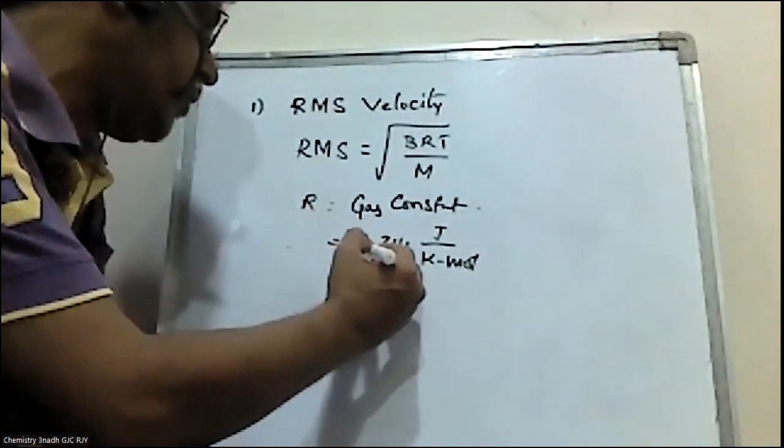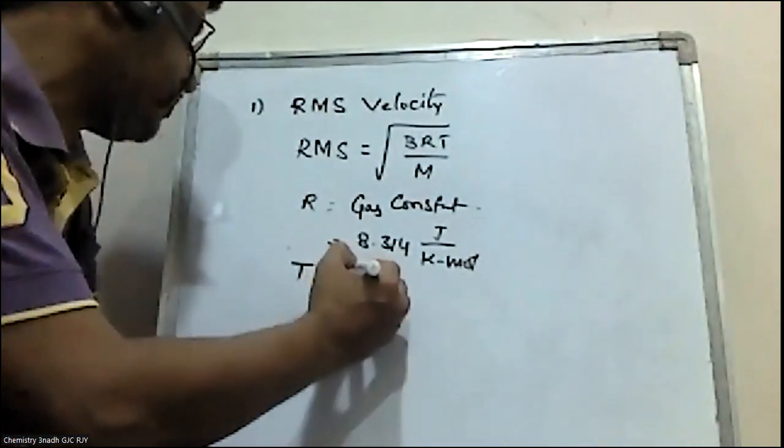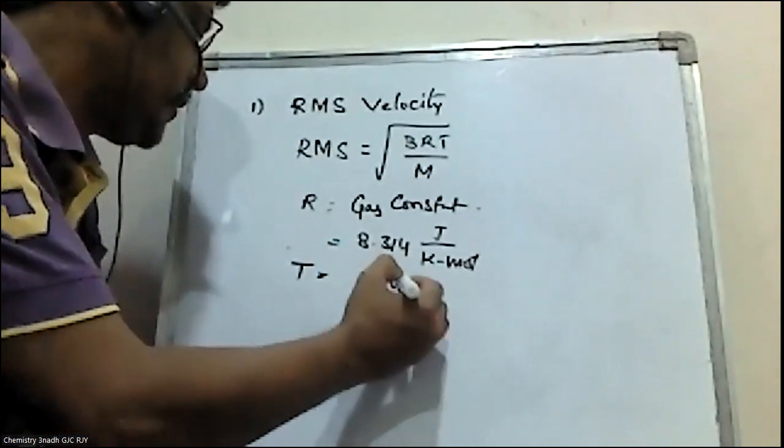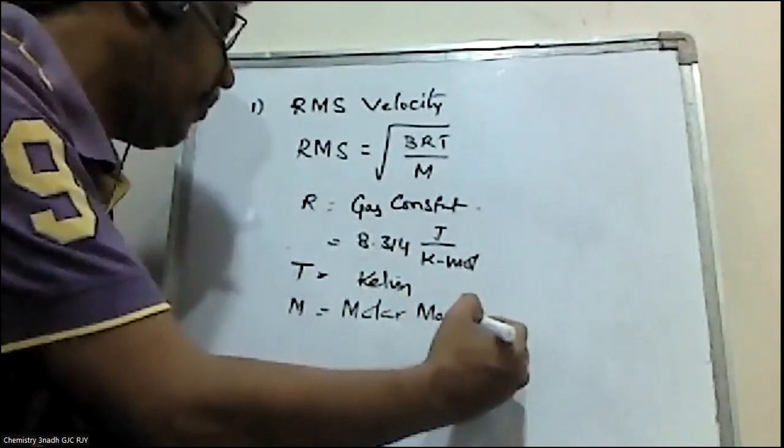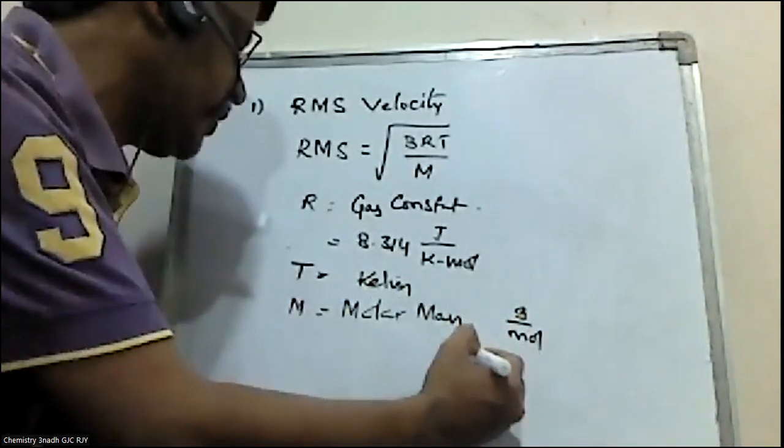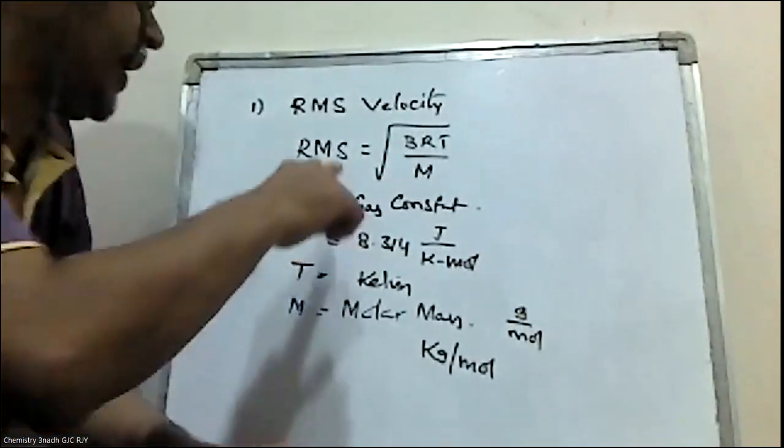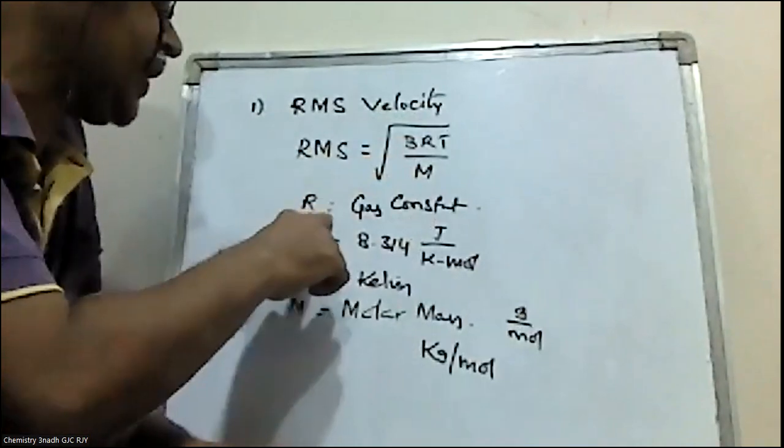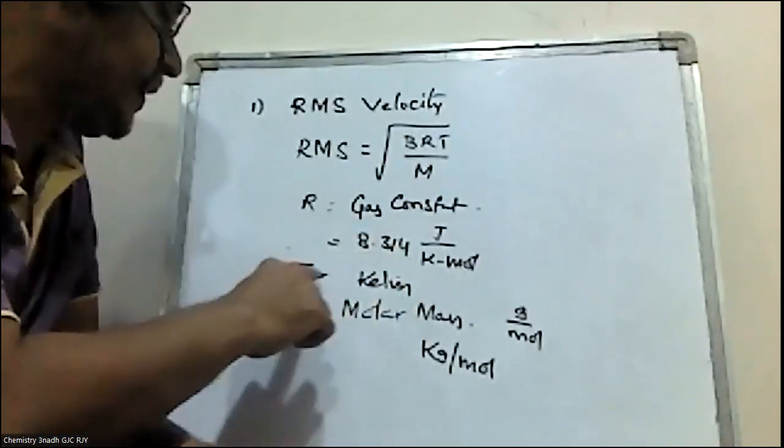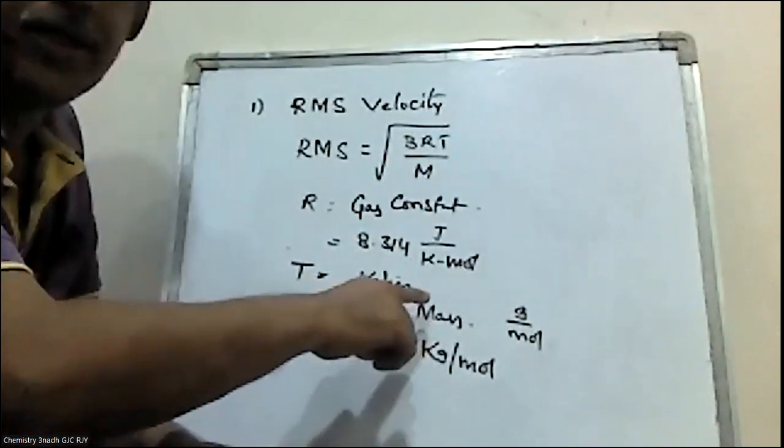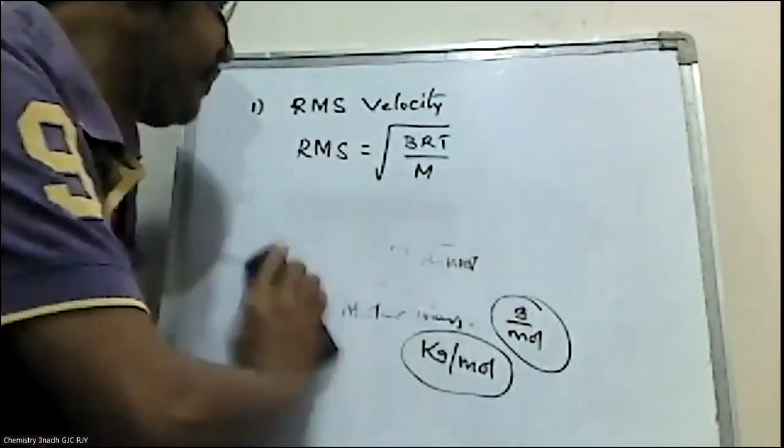The value is 8.314 joules per Kelvin per mole. The temperature should be in Kelvin, and the molar mass of the gas should be taken in kilograms per mole. Let me discuss with an example.